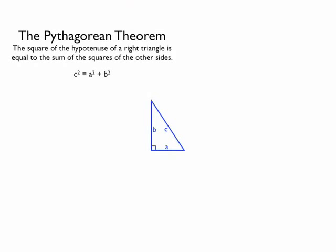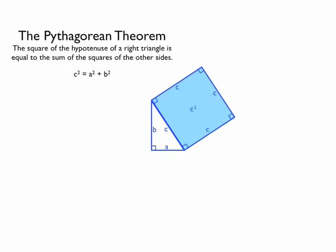The Pythagorean Theorem. The square of the hypotenuse of a right triangle is equal to the sum of the squares of the other sides. In other words, c squared equals a squared plus b squared.